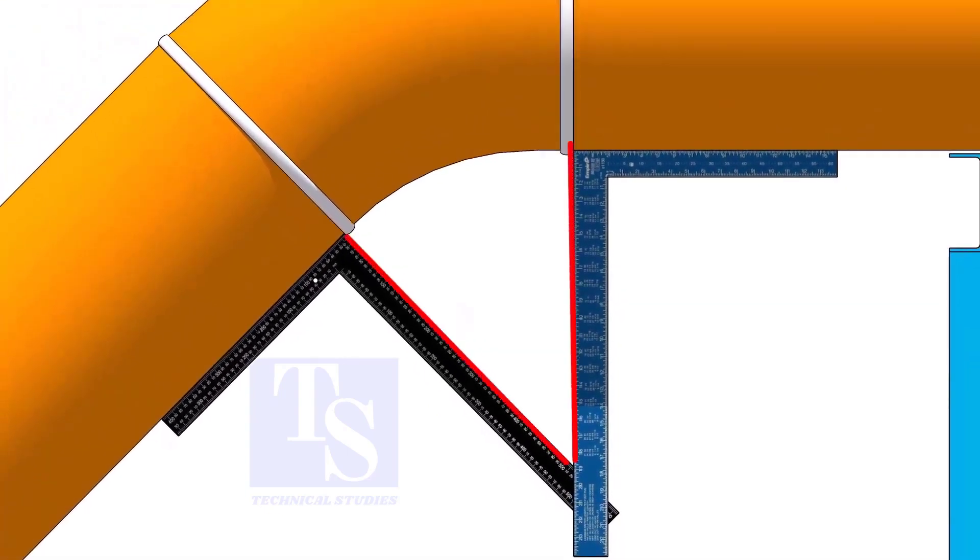Measure the distance from the pipe to the point where the right angles bisect each other. Measuring only one side is enough. Now, carefully measure the distance between the corners of the right angles.